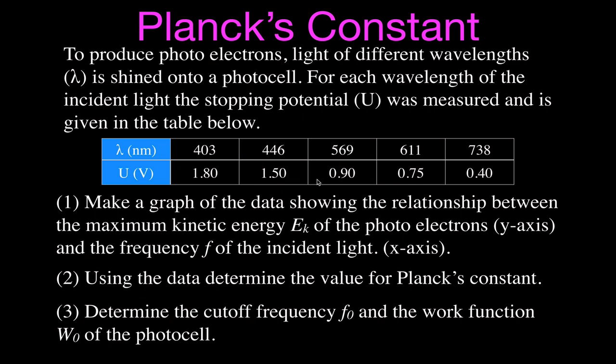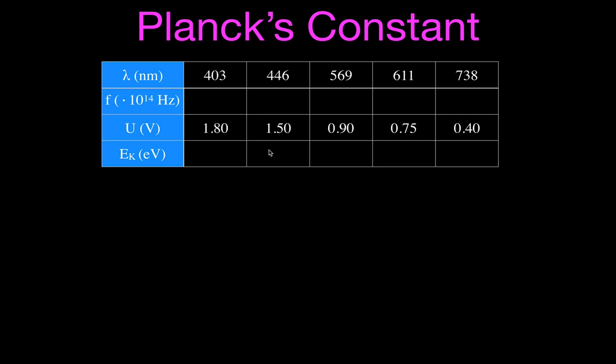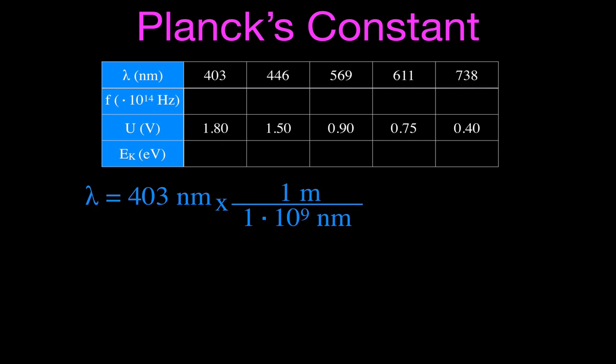We want to graph the frequency and the maximum kinetic energy of those photoelectrons, but we were not given the frequency or the kinetic energy. We were given the wavelength of the incident photons and the stopping potential. So we need to convert these wavelengths in nanometers into frequency. We'll do frequency first — this is 403 nanometers. We're going to take our wavelength in nanometers and convert from nanometers into meters by dividing by 1×10^9, because in 1 meter there are a billion nanometers. That gives us a wavelength of 4.03×10^-7 meters.